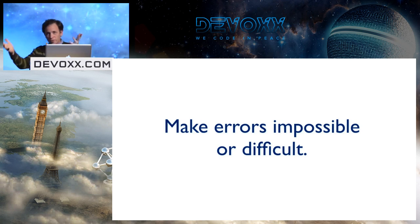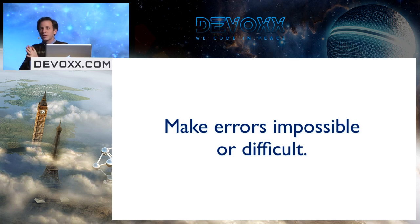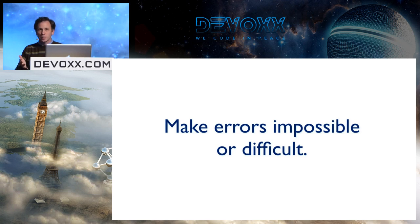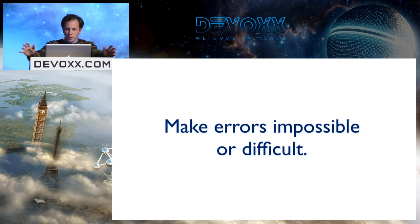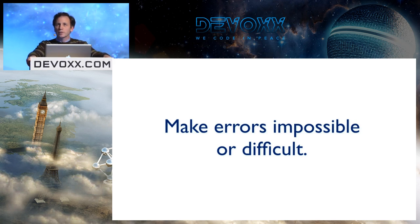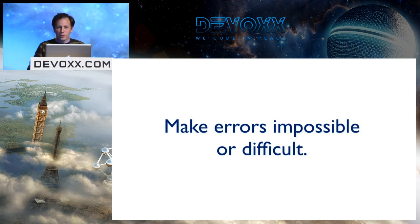Given that programmers are people and people make mistakes, you want to try and render those mistakes impossible if possible. If it's not possible to make it impossible, make it difficult to make an error. Your users are sometimes in a comfortable environment with plenty of time, but a lot of times they have deadlines, pressure, and they're in a hurry and they make mistakes.